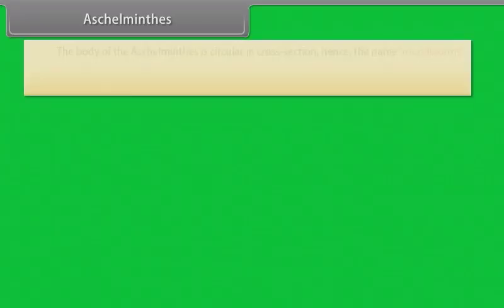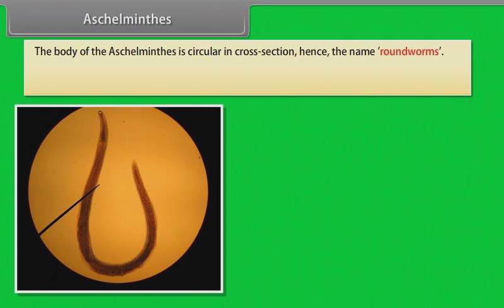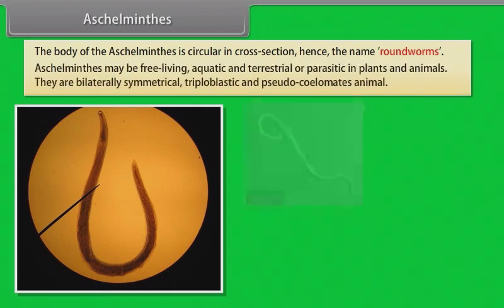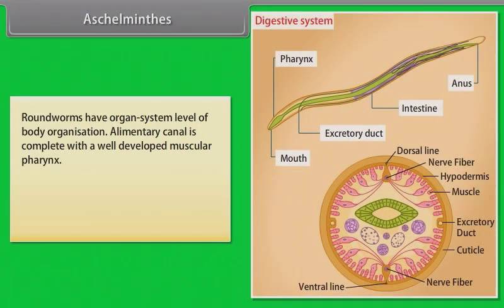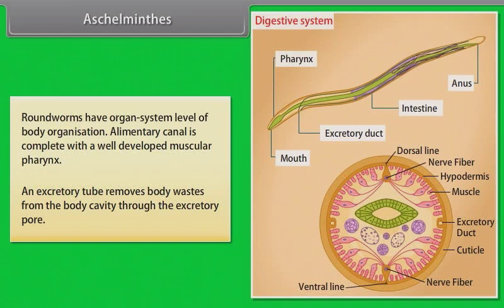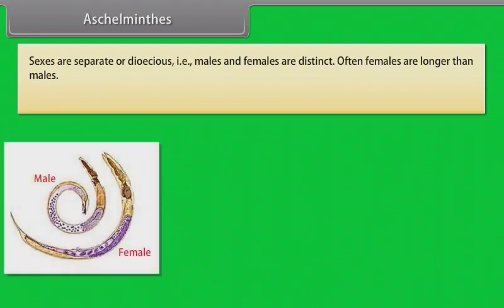Aschelminthes: The body of Aschelminthes is circular in cross-section, hence the name roundworms. They may be free-living, aquatic and terrestrial, or parasitic in plants and animals. Aschelminthes are bilaterally symmetrical, triploblastic and pseudocoelomate animals. Roundworms have organ system level of body organization. The alimentary canal is complete with a well-developed muscular pharynx. An excretory tube removes body waste from the body cavity through the excretory pore. Sexes are separate, that is dioecious — males and females are distinct. Often females are longer than males.